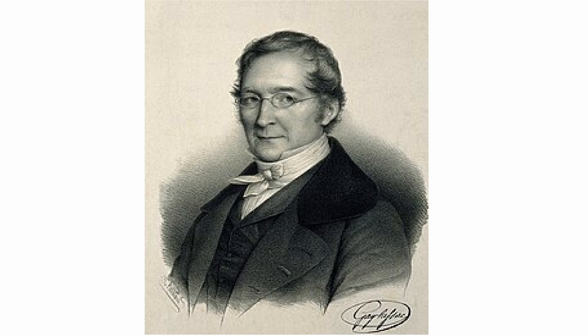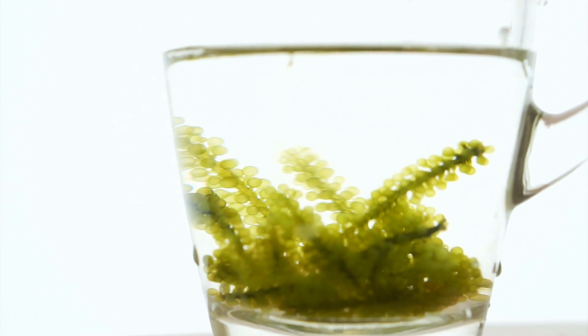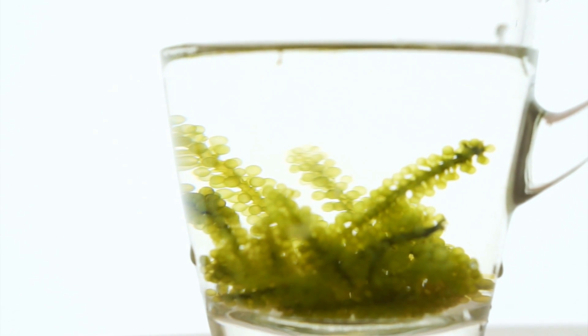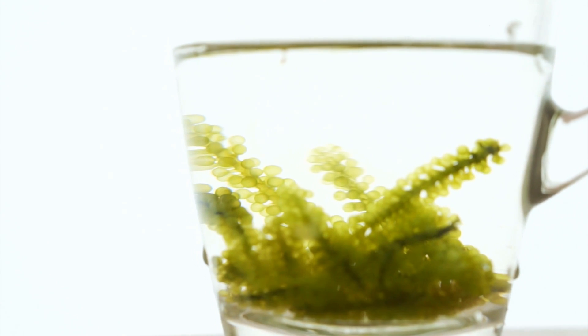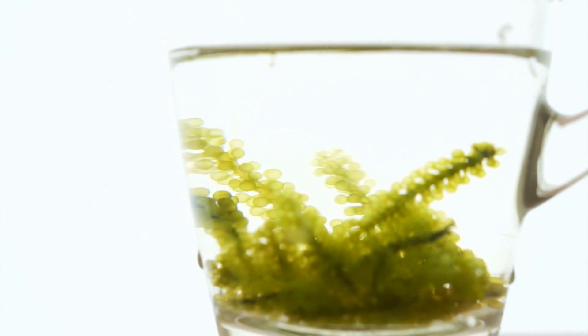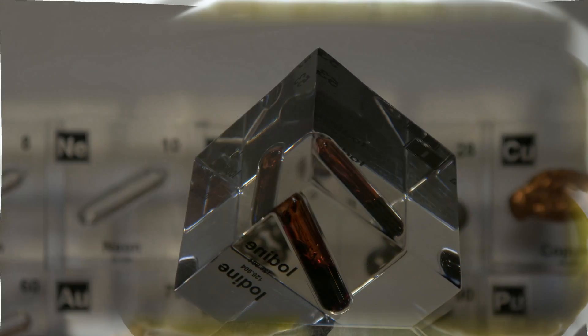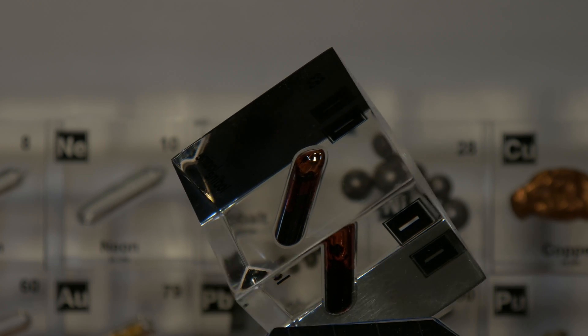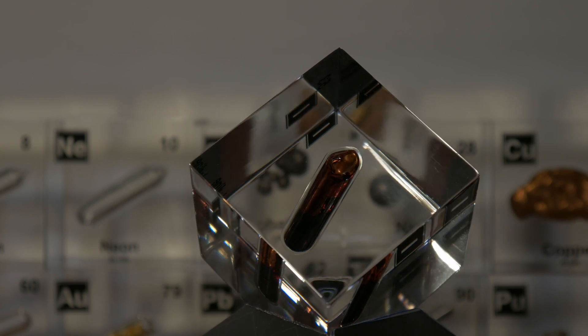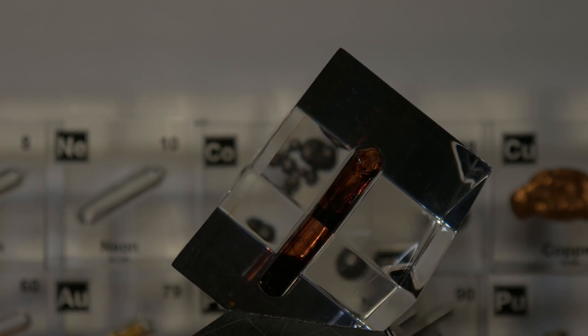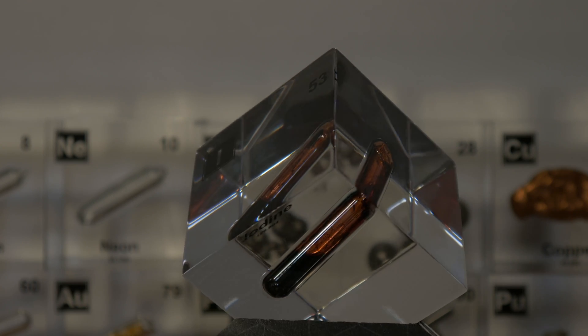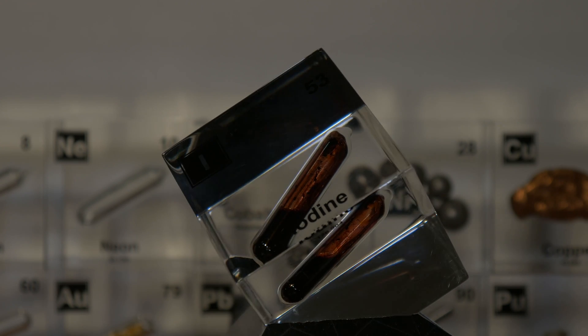French chemist Bernard Courtois accidentally discovered it while experimenting with seaweed. While he was extracting potassium and sodium from seaweed ash, he accidentally added too much sulfuric acid. A violet-colored cloud evolved from the mass, and the resulting gas was condensed into dark crystals. This was the first occurrence of observed solid iodine.